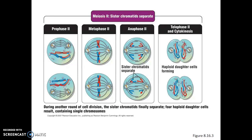During prophase of meiosis 2, chromosomes condense and nuclear envelopes break down. During metaphase 2, the duplicated chromosomes line up on the metaphase plate. In anaphase 2, it's the sister chromatids that separate from each other, becoming daughter chromosomes. Then at telophase 2, new cells are formed. In meiosis 2, we started with cells that were haploid, and we end with cells that are still haploid.